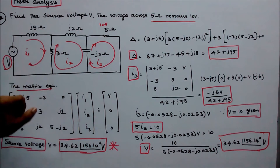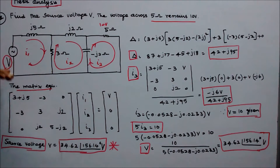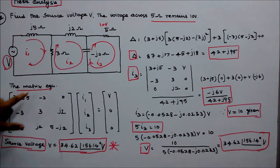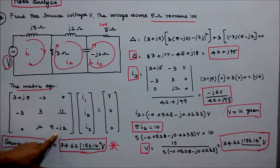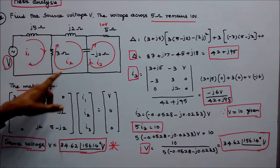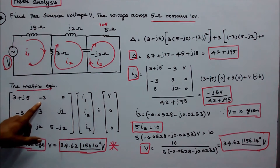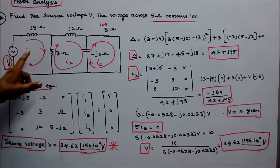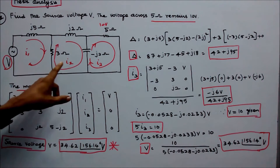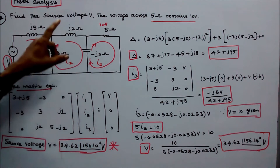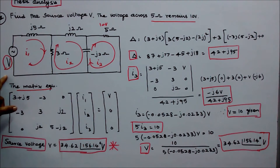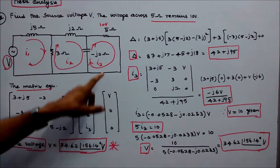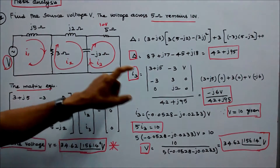Forming the matrix equation, the diagonal elements are: loop 1 = 3 + j5, loop 2 = 3 + j2 minus j2 = 3, and loop 3 = 5 minus j2. The element common to loops 1 and 2 is 3 (opposite direction, so minus 3). There is no element common to loops 1 and 3, so that entry is zero. The element common to loops 2 and 3 is minus j2 (opposite direction, so plus j2). V1 is unknown (to be found); no source in loops 2 or 3, so those entries are zero.